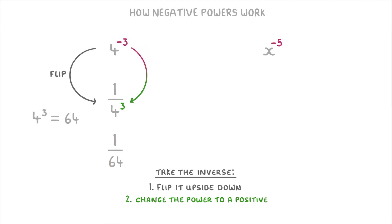For this next one, x to the power of negative 5, you'd flip it to get 1 over x, and then change the power of negative 5 to positive 5, so our answer would just be 1 over x to the power of 5.